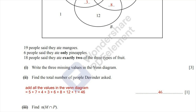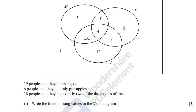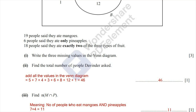Question 3: Find the number of M intersection P — the number of people who ate both mangoes and pineapples. The number 7 represents people who ate mangoes and pineapples but not bananas, and 4 represents those who ate all three including mangoes and pineapples. So 7 plus 4 equals 11.